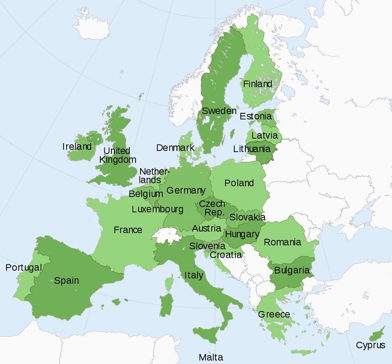The transfer by the states from their domestic legal system to the community legal system of the rights and obligations arising under the treaty carries with it a permanent limitation of their sovereign rights. The question of whether EU law is superior to national law is subject to some debate. The treaties do not give a judgment on the matter, but court judgments have established EU law's superiority over national law, and it is affirmed in a declaration attached to the Treaty of Lisbon; the European Constitution would have fully enshrined this.